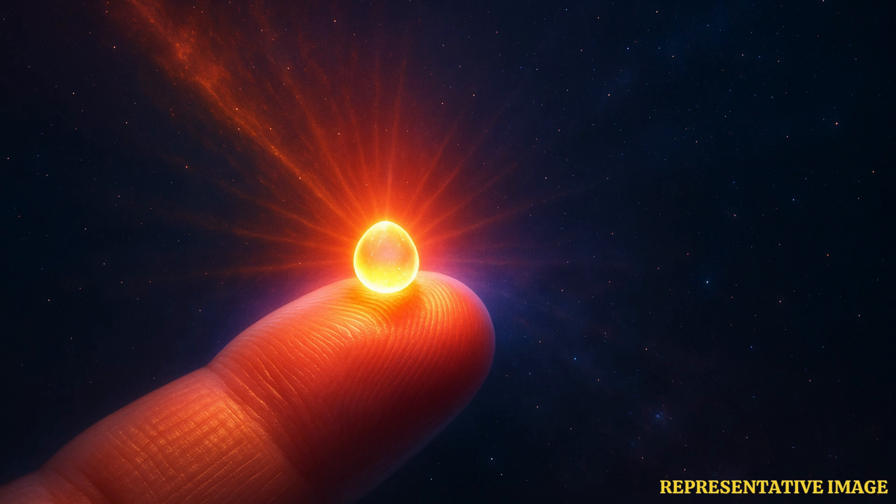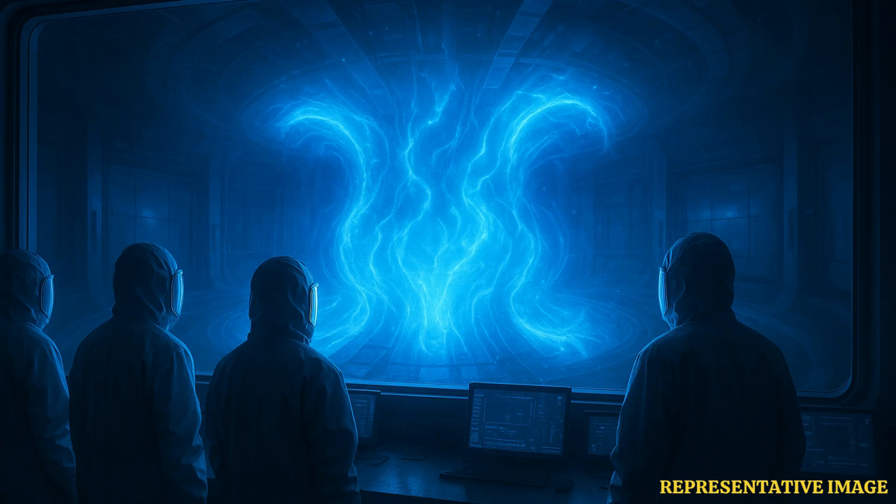The team of scientists, working near Oxford in the UK, used joint European Taurus. It's a huge machine the shape of a donut. The machine is also called tokamak. Scientists fed deuterium and tritium to the machine. These are isotopes, or in plain language variants of hydrogen.